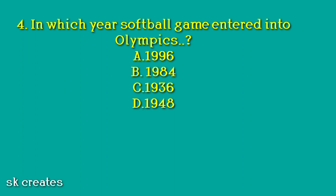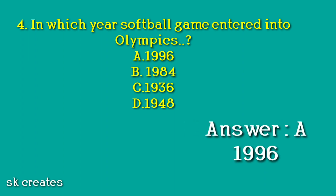Question number 4: In which year did the softball game enter into the Olympics? Option A. 1996. Option B. 1984. Option C. 1936. Option D. 1948. Answer: A. 1996.